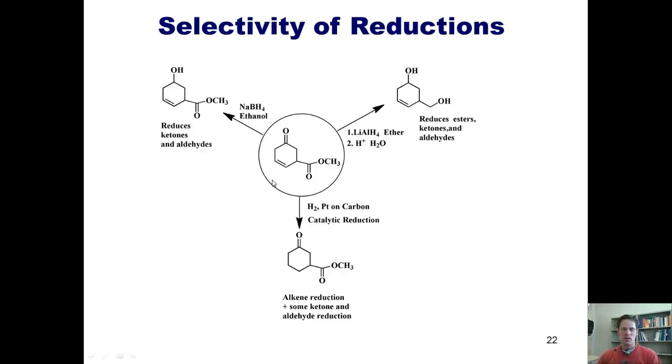For example, if I started with this molecule, which you'll notice has a ketone, an alkene, and an ester in it, I can selectively affect only certain parts of this molecule using different conditions. For example, you might remember that sodium borohydride will only reduce ketones and will not reduce esters, and it also will not reduce alkenes. Thus, if I take this material and I treat it with sodium borohydride, it will only reduce the ketone, converting it into a secondary alcohol, and will not touch the ester or the alkene.